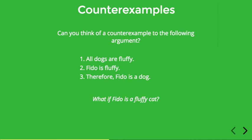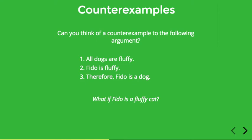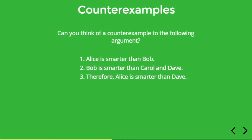A counter example is a description of a state of affairs in which the premises are true and the conclusion is false. Let's think about another example: Alice is smarter than Bob; Bob is smarter than Carol and Dave; therefore Alice is smarter than Dave.